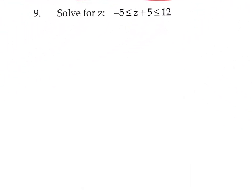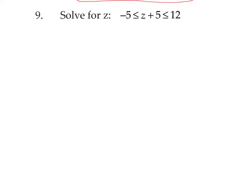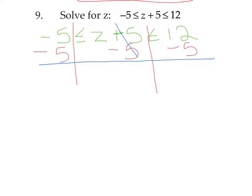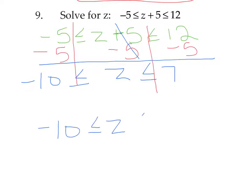Number 9 is a compound inequality because it has two symbols. We have negative 5 is less than or equal to z plus 5 is less than or equal to 12. We isolate z in the middle — undo the plus 5 by subtracting 5 from all three parts. We use vertical lines to keep our three areas separated. So we have z less than or equal to 7 on the right, and greater than or equal to negative 10 on the left. Final answer: negative 10 is less than or equal to z is less than or equal to 7.